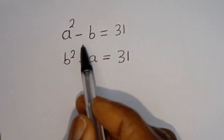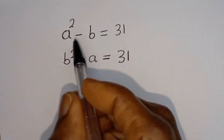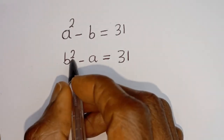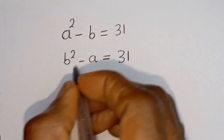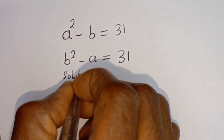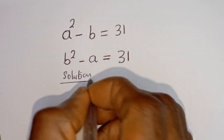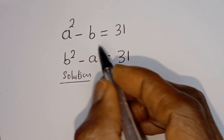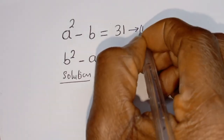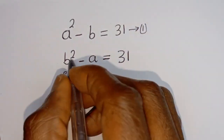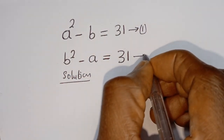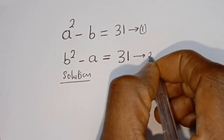Hello. How to solve for a and b in this equation: a squared minus b is equal to 31, and b squared minus a is equal to 31. Solution. Let's call a squared minus b equals 31 equation 1, and b squared minus a equals 31 equation 2.